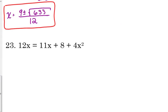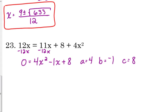Alright, let's look at number 23. We've got 12X equals 11X plus 8 plus 4X squared. I'm going to move the 12X by subtracting it. And I need to write it in standard form. So the 4X squared comes first, 11 minus 12 is negative 1X, and then we've got plus 8 on the end. So A is 4, B is negative 1, and C is 8.